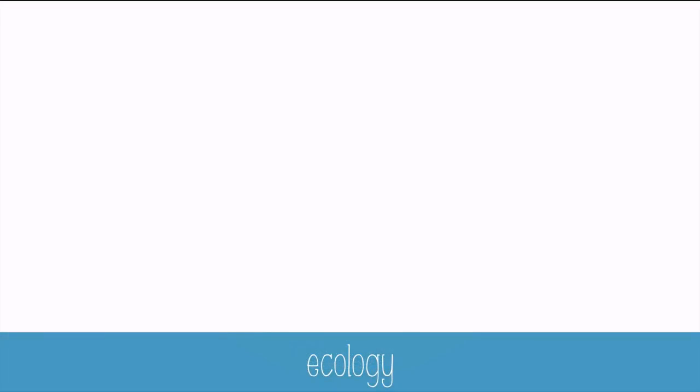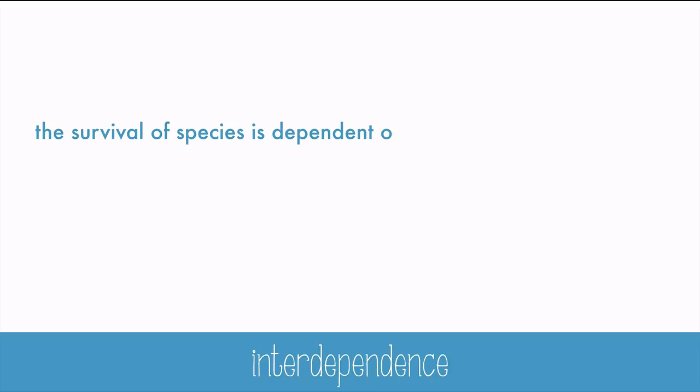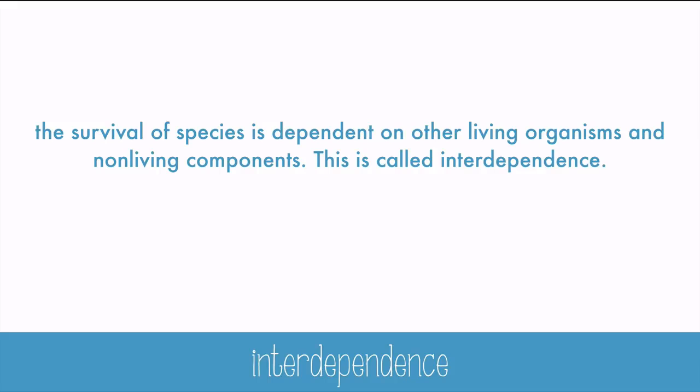The more specific definition of ecology is the study of the relations of organisms to one another and to their physical environment. It answers questions like: how do living things interact and rely on each other, or on their surroundings? The survival of any species is dependent on other living organisms and non-living components — this is called interdependence. For example, humans could not survive without plants to produce oxygen, and the plants need carbon dioxide from humans and other organisms, or even from volcanic eruptions.